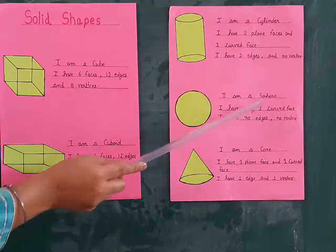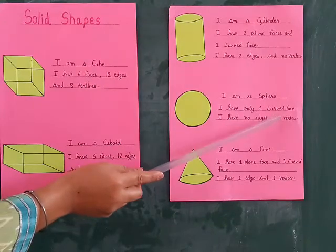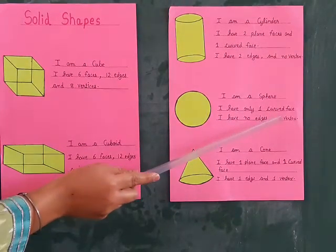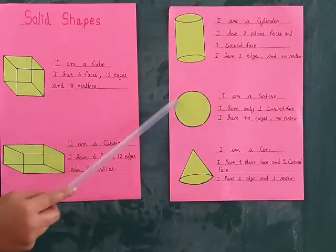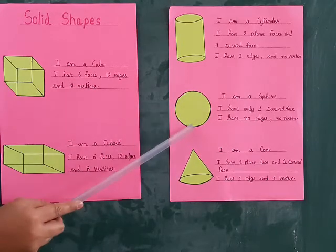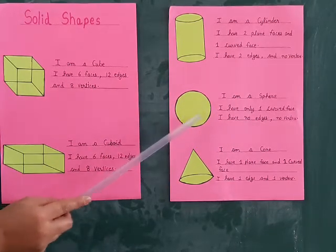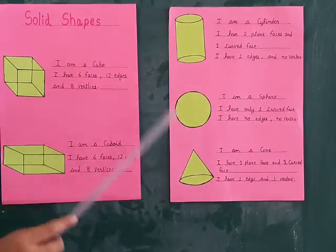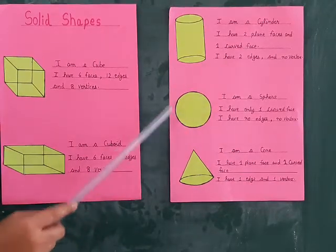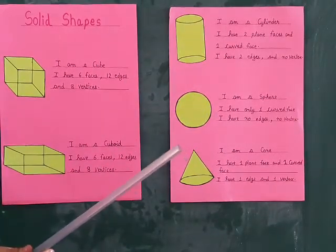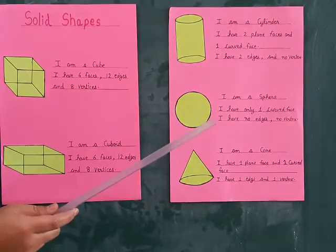I am a sphere. I have only 1 curved face. I have no edges and no vertices. It has no edges and no vertices. It looks like a circle. Examples of sphere are football, orange, etc.